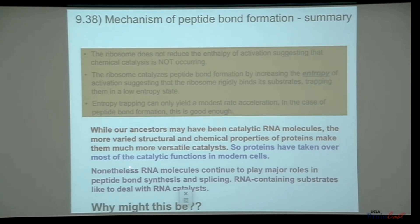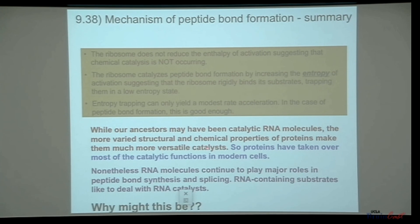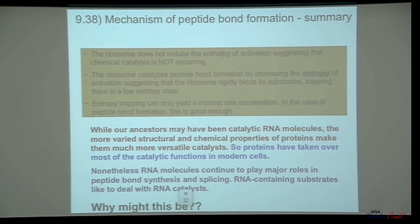While our ancestors may have been catalytic RNA molecules, the more varied structural and chemical properties of proteins make them much more versatile catalysts, allowing them to come up with all sorts of ways to do chemical catalysis. And so proteins have taken over most of the catalytic functions in modern cells.